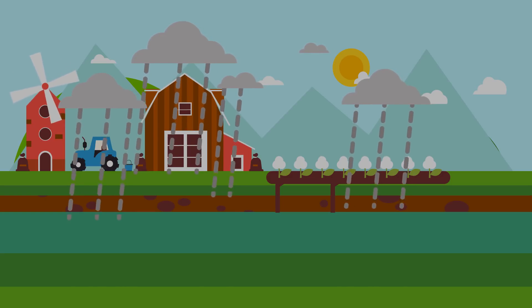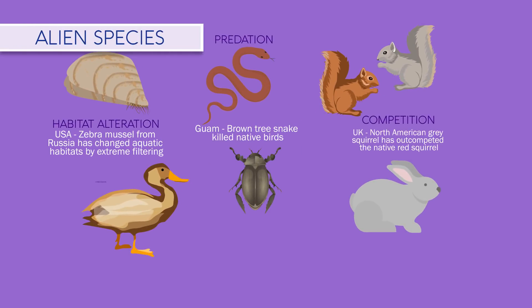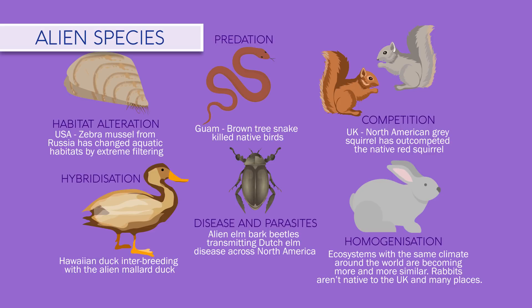A huge impact humans have had on planet Earth is the introduction of alien species to habitats. It is estimated that on any given day there are 3,000 species in transit aboard ocean-going vessels. Alien species can cause problems in a number of ways.